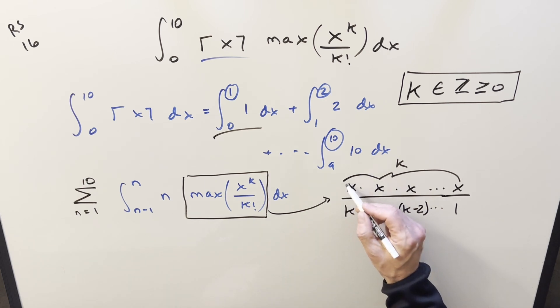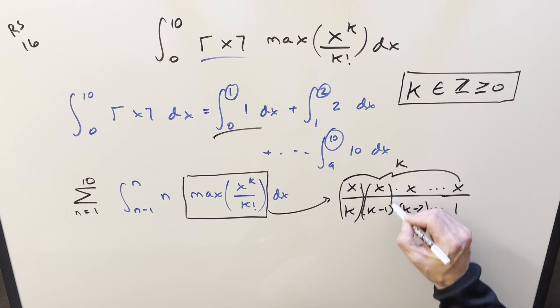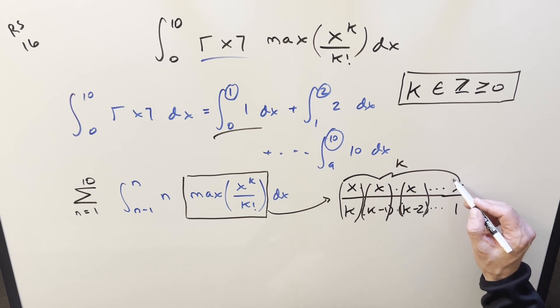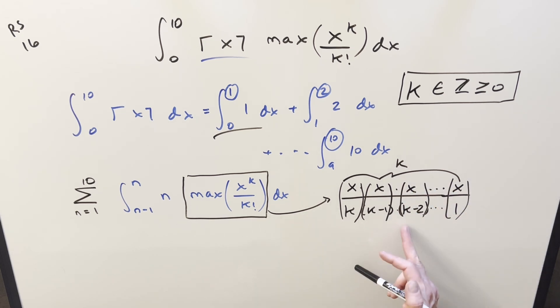So you can kind of think about it as like multiplying these separate fractions. I'm making a mess of it, but I think you get what I'm trying to say. And all we need to do is we just need to maximize this thing. Maybe a good way to think about this is with an example.